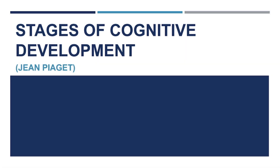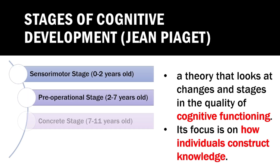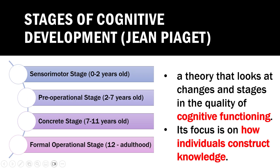Piaget proposed four stages that children go through as they develop, each a stepping stone to more complex thinking. The stages are: the Sensorimotor stage, birth to two years; the Pre-operational stage, two to seven years; the Concrete operational stage, seven to eleven years; and the Formal operational stage, twelve years and older. Each stage represents a different level of thinking complexity. We will discuss each stage thoroughly in our next lesson.